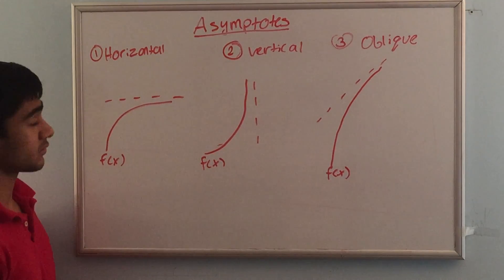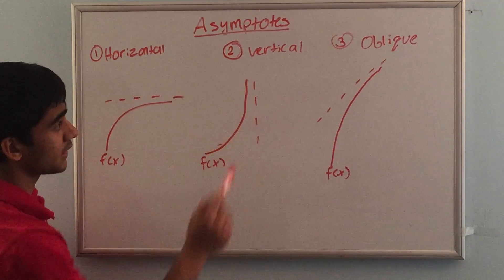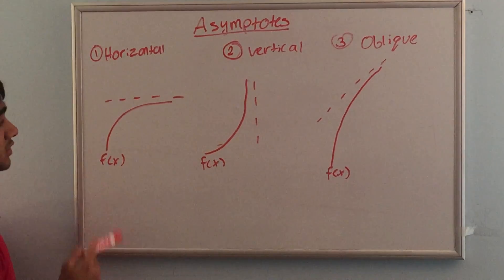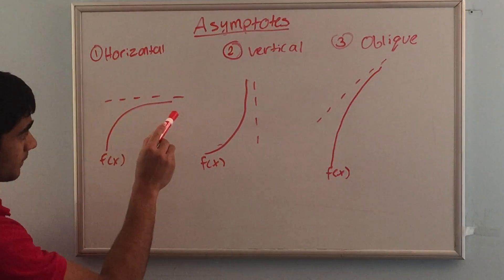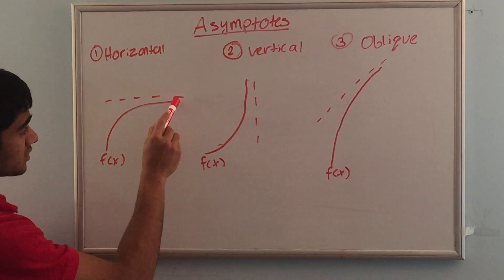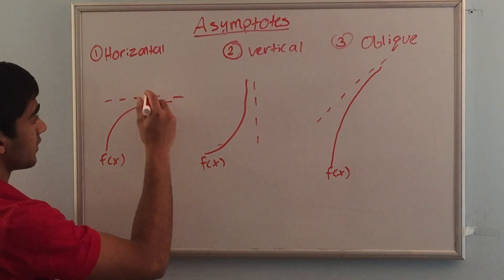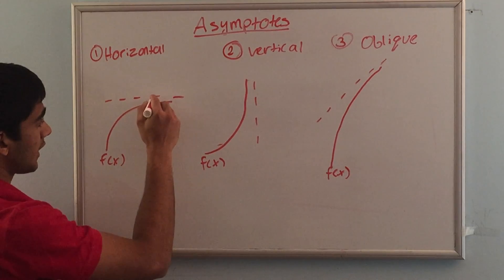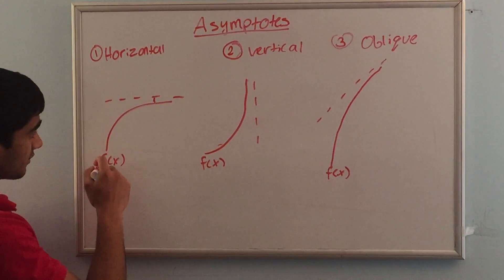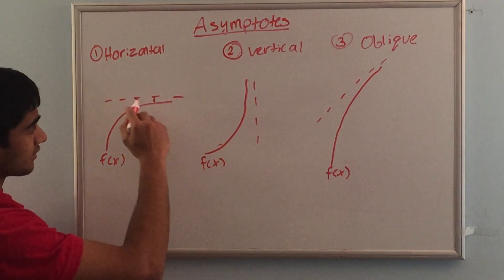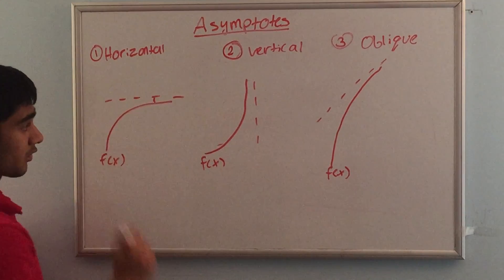There are three types of asymptotes: the horizontal asymptote, the vertical asymptote, and the oblique asymptote. As you can see, the horizontal asymptote is the horizontal dashed line and this function f approaches it but never actually touches it or crosses it, meaning the distance between this asymptote and the function will come really close to zero as the function extends on to infinity.